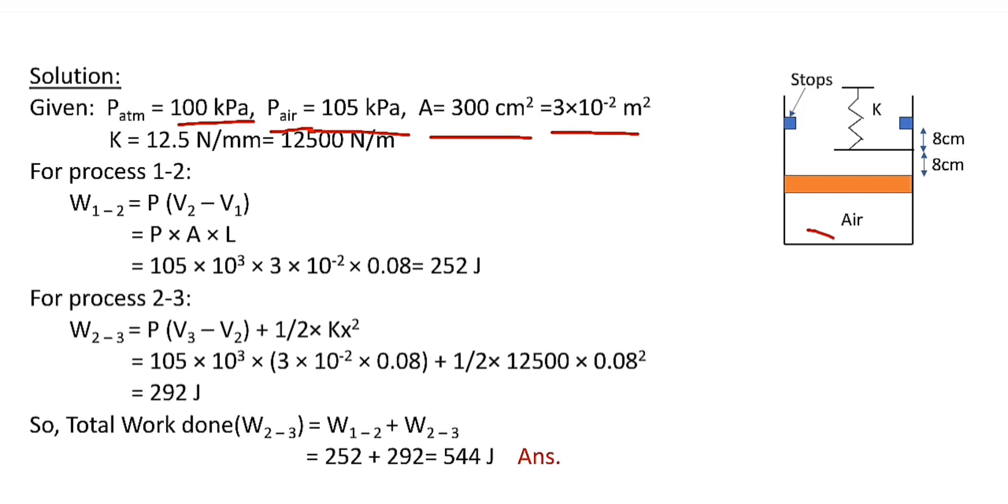Spring constant k is 12.5 N per mm, which in SI units equals 12,500 N/m. These values are given in the question.